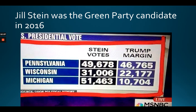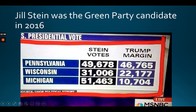In 2016, that happened again. Trump won Pennsylvania by 46,700 votes, but Jill Stein received more votes than that margin. Wisconsin — Trump won by 22,000 votes, but look at how many votes Stein got. Michigan — Trump won by 11,000 votes, but Stein got over 51,000 votes. Those Stein votes would have gone to Hillary Clinton most likely. The Green Party played the role of spoiler, potentially stealing the election from Clinton.